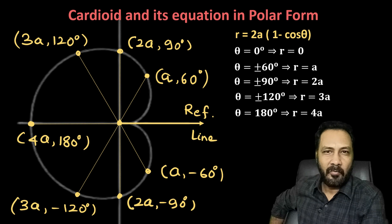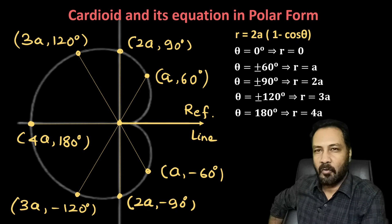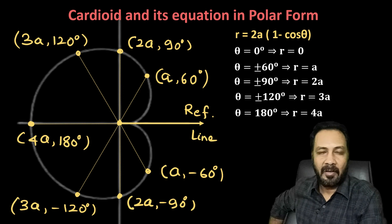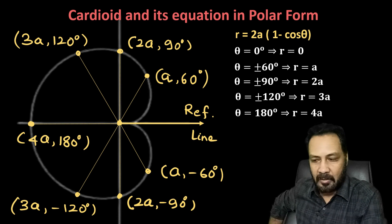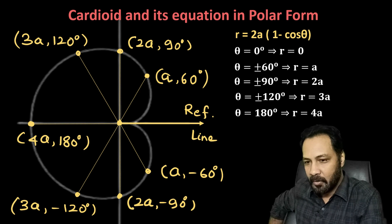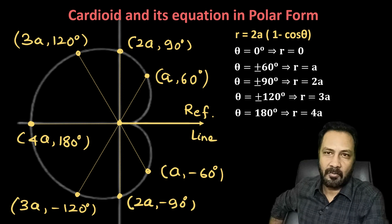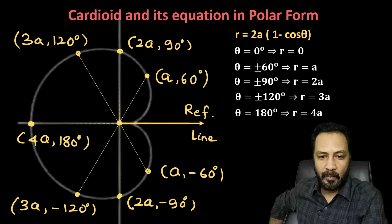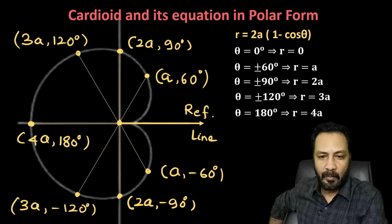So we understood what the cardioid is, derived its polar form from the fundamental definition, and then plotted the cardioid from the equation. I hope that is clear.